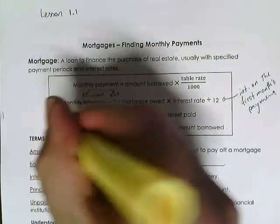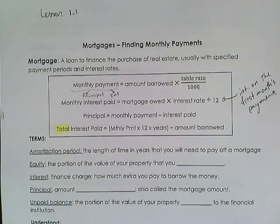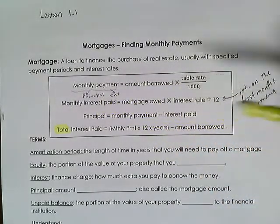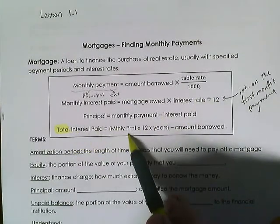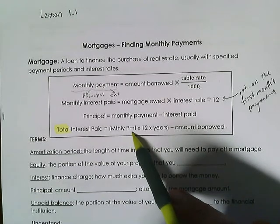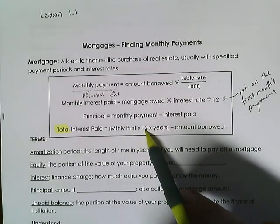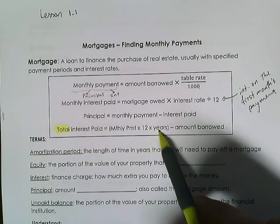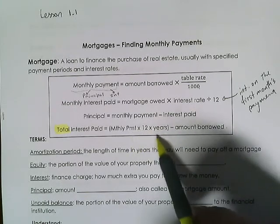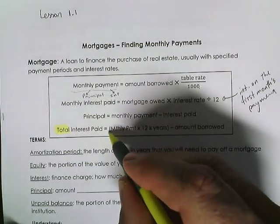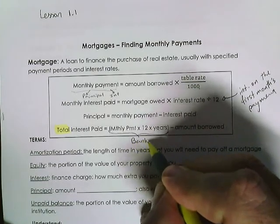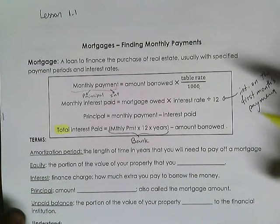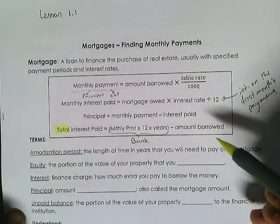Total interest paid is very important to understand — this is over the lifetime of the mortgage, not just the first month. You take your monthly payment, multiply by 12 (for 12 months in a year), then multiply by the number of years. That gives you how much you paid the bank in total over, say, 25 years.